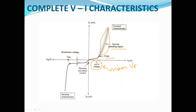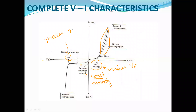Important parameters for the examination: Cut-in voltage is the minimum forward voltage at which the diode starts conducting — also known as knee voltage. Reverse saturation current is the constant current that flows for constant temperature, due to minority charge carriers, when reverse bias voltage is applied. Breakdown voltage VB is the maximum reverse voltage at which the diode may be damaged.